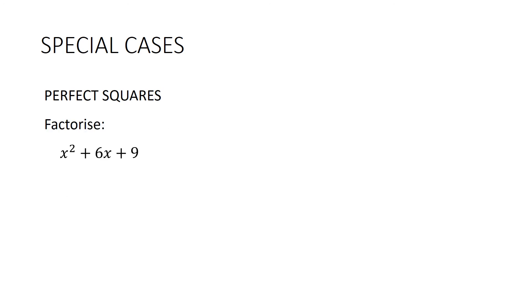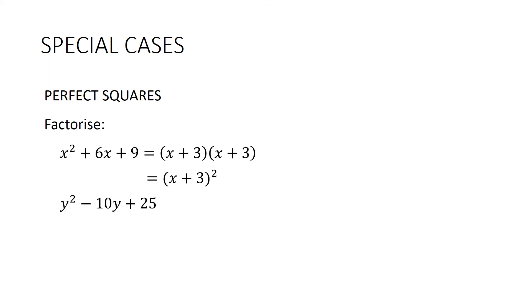Special cases: perfect squares. For x² + 6x + 9: the last term is positive so both signs are positive. We need factors of 9 that add to 6 — they are 3 and 3, so (x + 3)². For x² − 10x + 25: signs are the same, both negative this time. We need factors of 25 that add to 10 — that's 5 and 5. So (x − 5)².